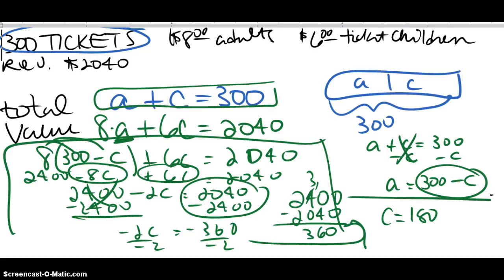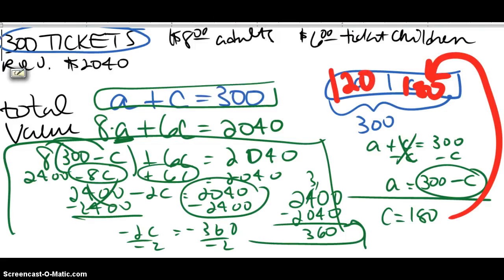All right, so the cool thing is, now I can go back to my strip diagram and figure that out. So the number of children tickets is 180. Well, 300 is the total, so if I subtract, that means there's 120 for adults. All right, so I know that there were 180 children tickets sold, and then my adult had to be 120, so that they add up.